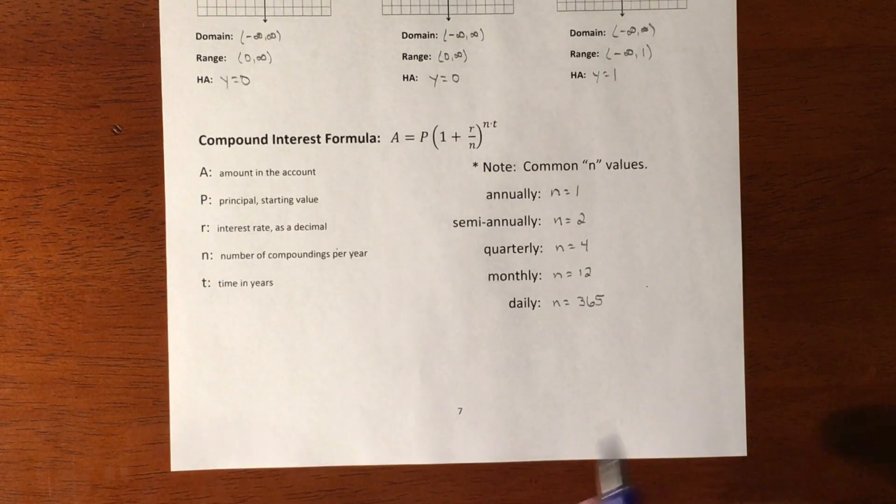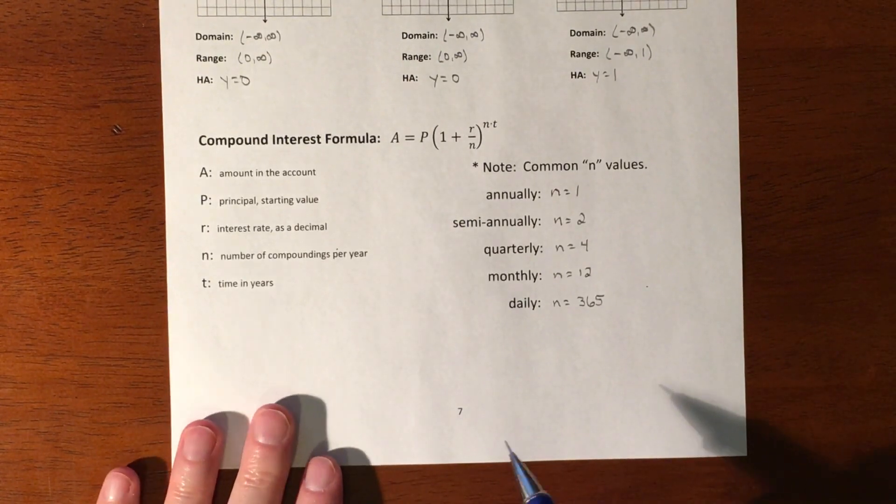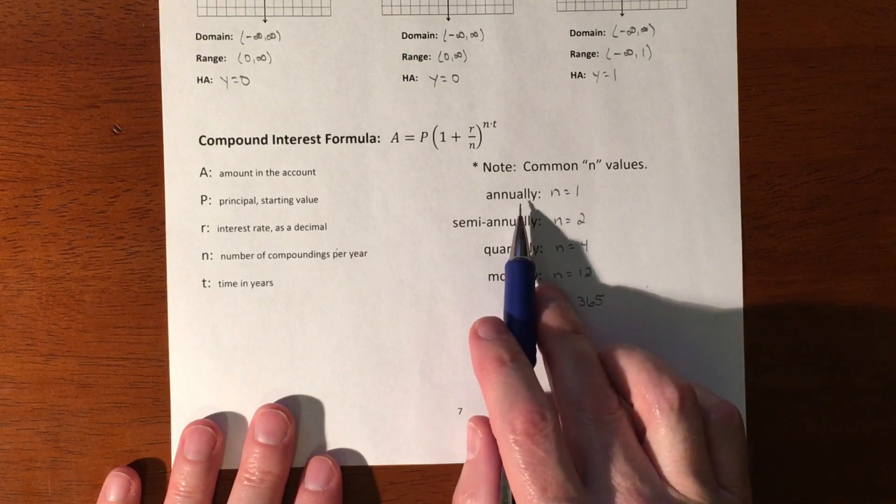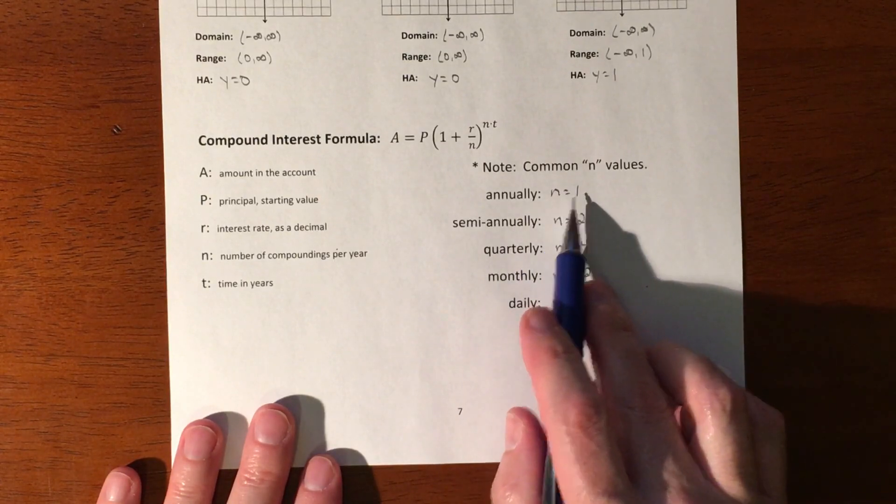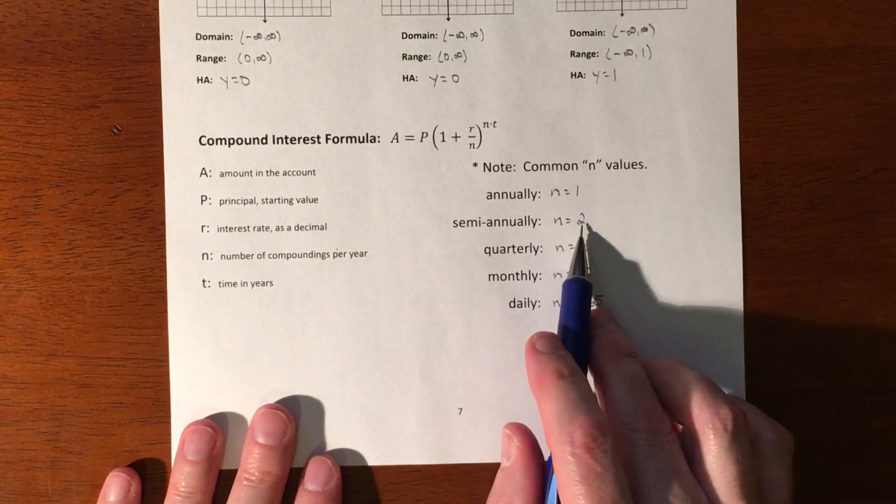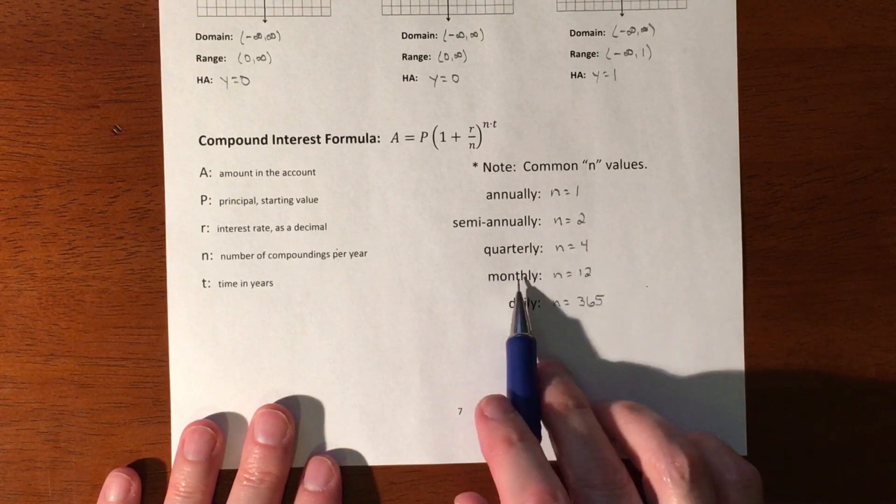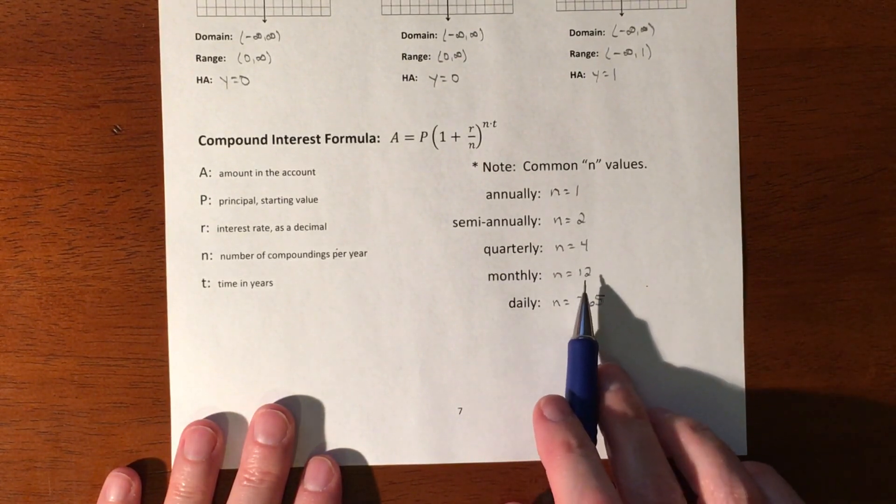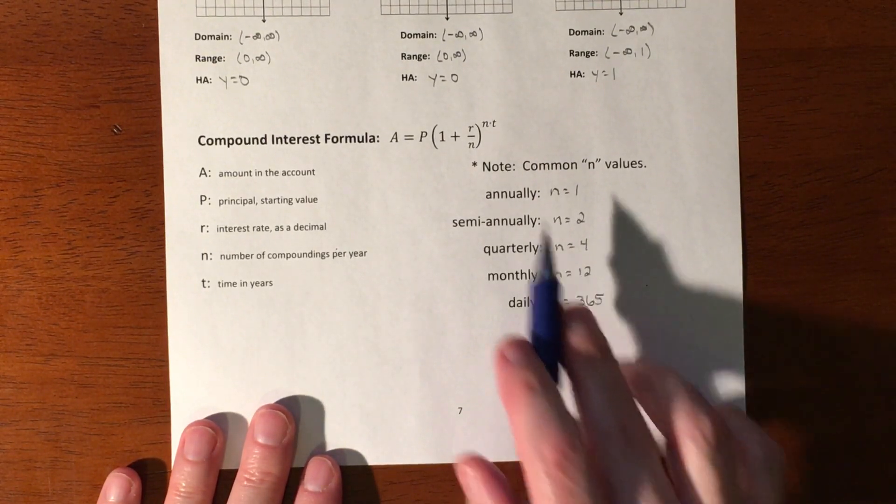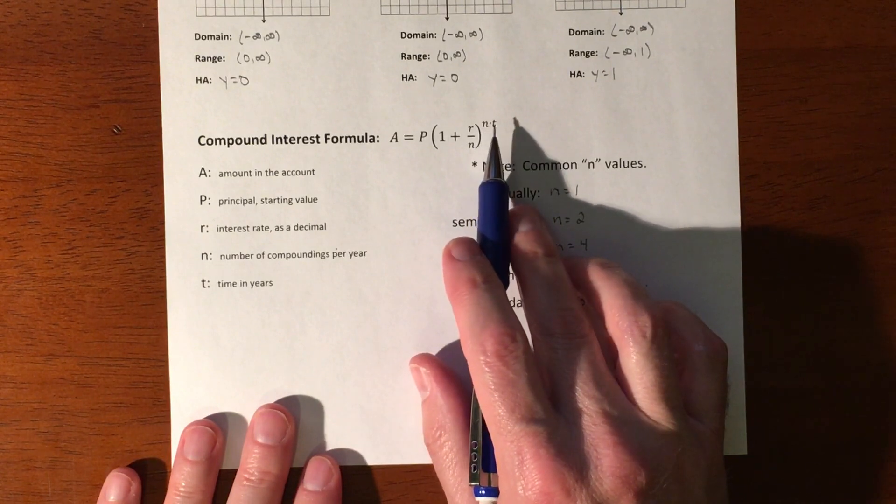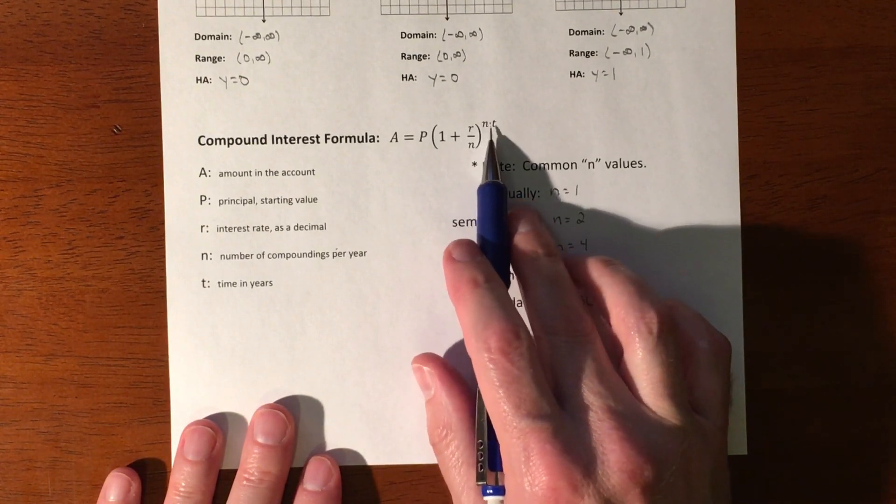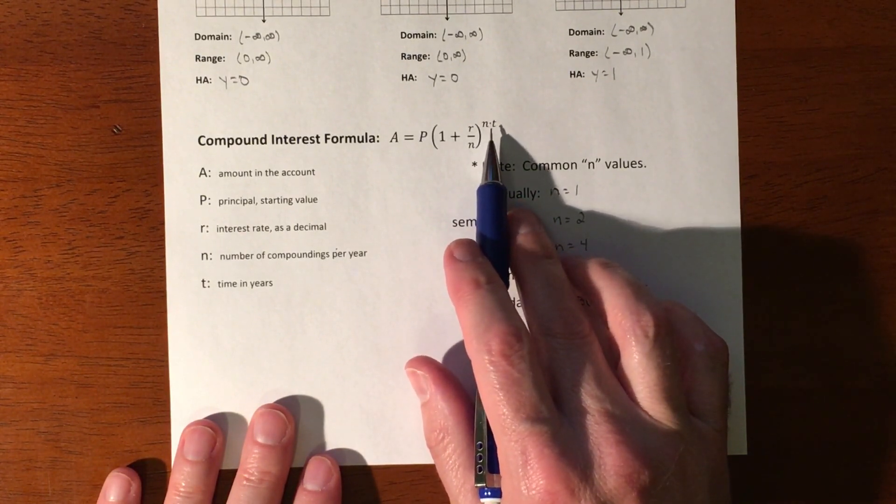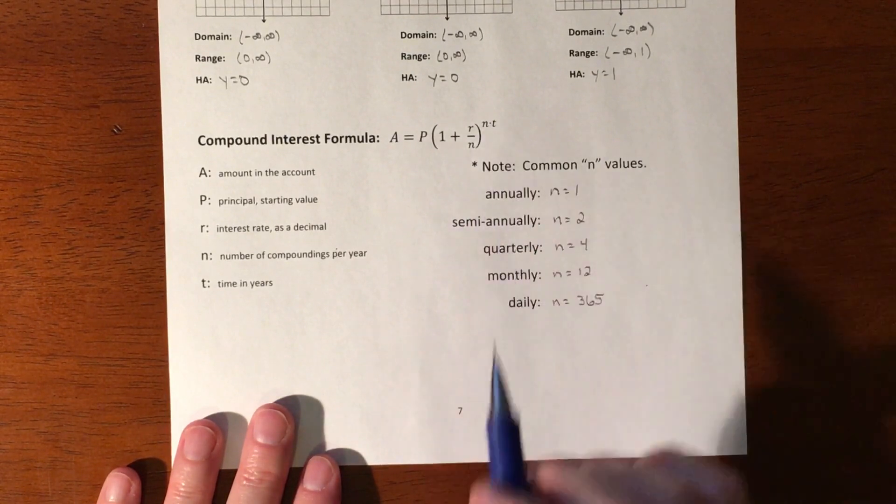Here are your different options: annually is n equals one, semi-annually means two times a year, quarterly means four times a year, monthly means 12 times a year, and daily means 365 times a year. So if you compounded something monthly for 30 years, you would have 12 times 30, which is 360 total times you'd be compounding. That's what that power represents.